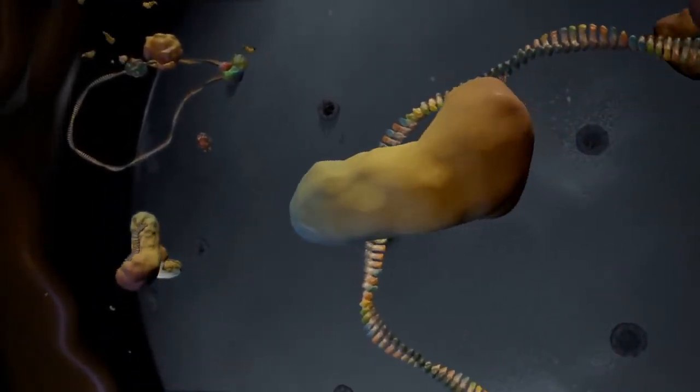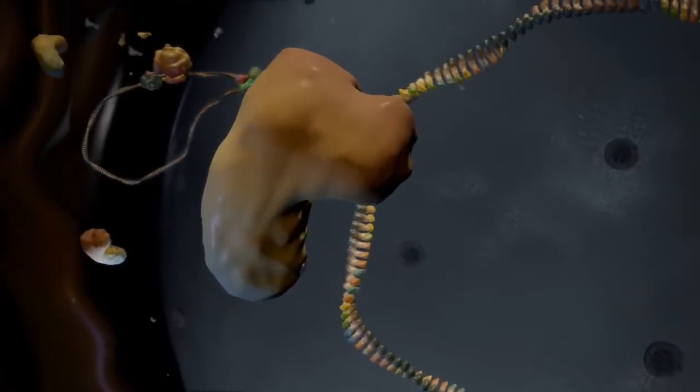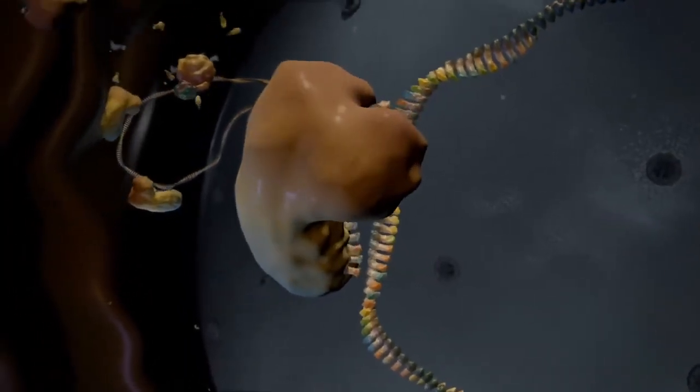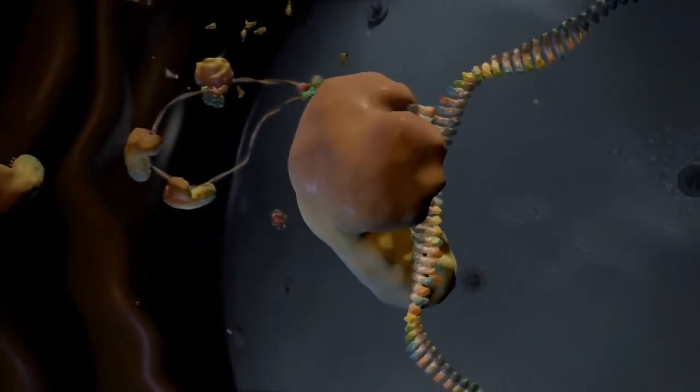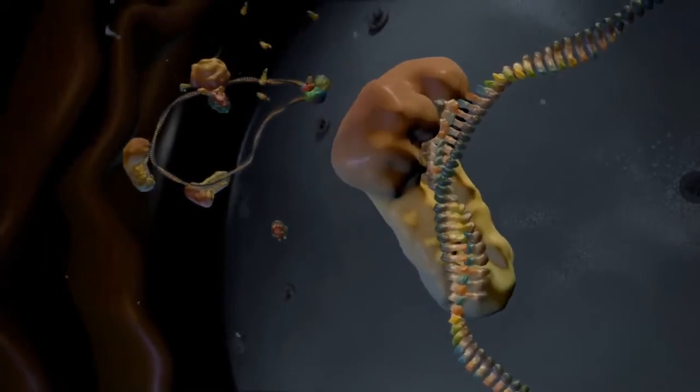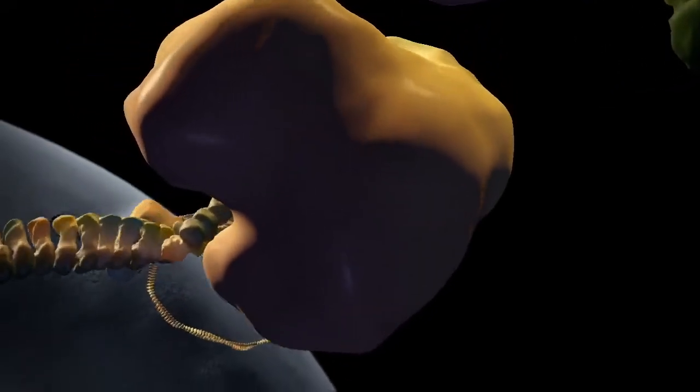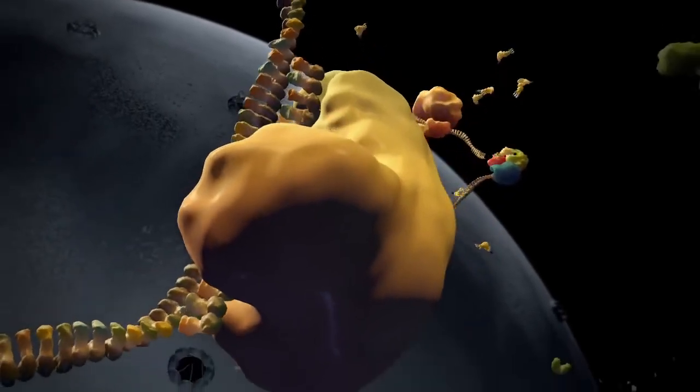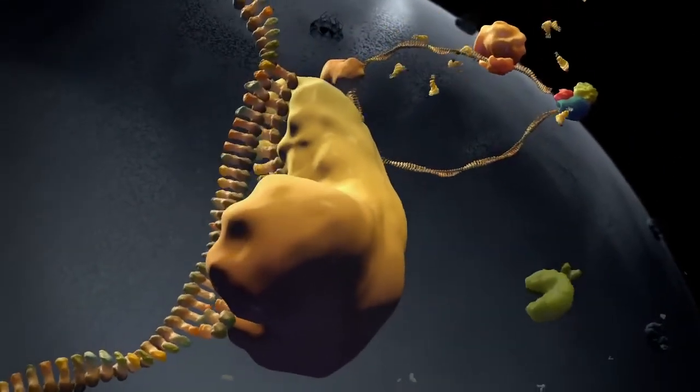SiRNAs direct RISC to bind to specific messenger RNAs. The targeting is precise because it's determined by base pairing between the siRNA and the target messenger RNA. SiRNAs often have perfect complementarity to their target sites.